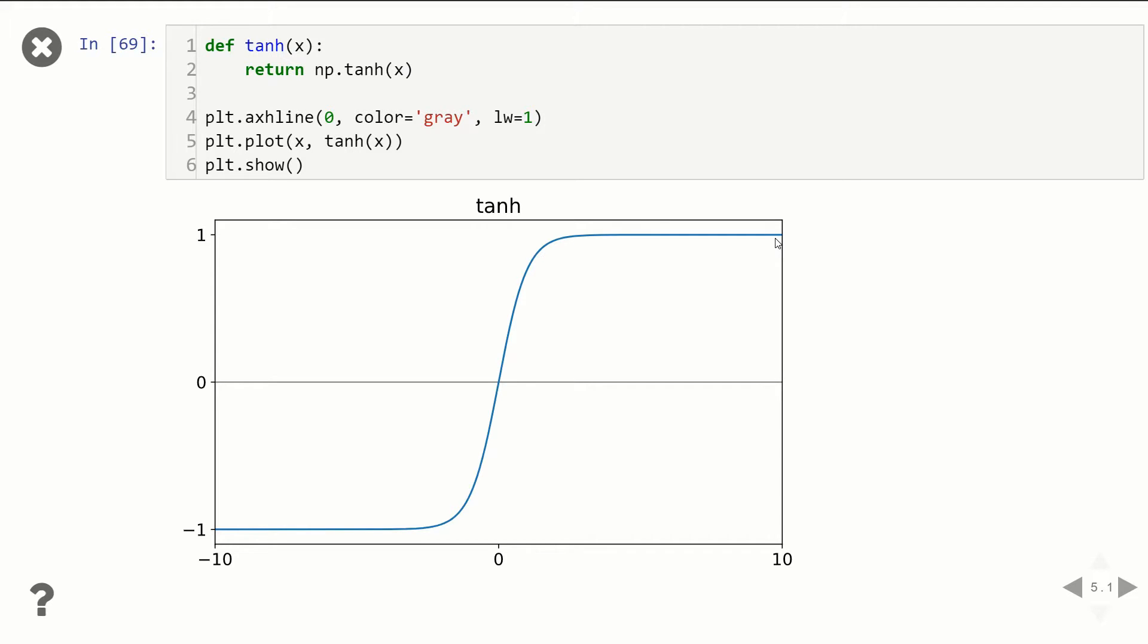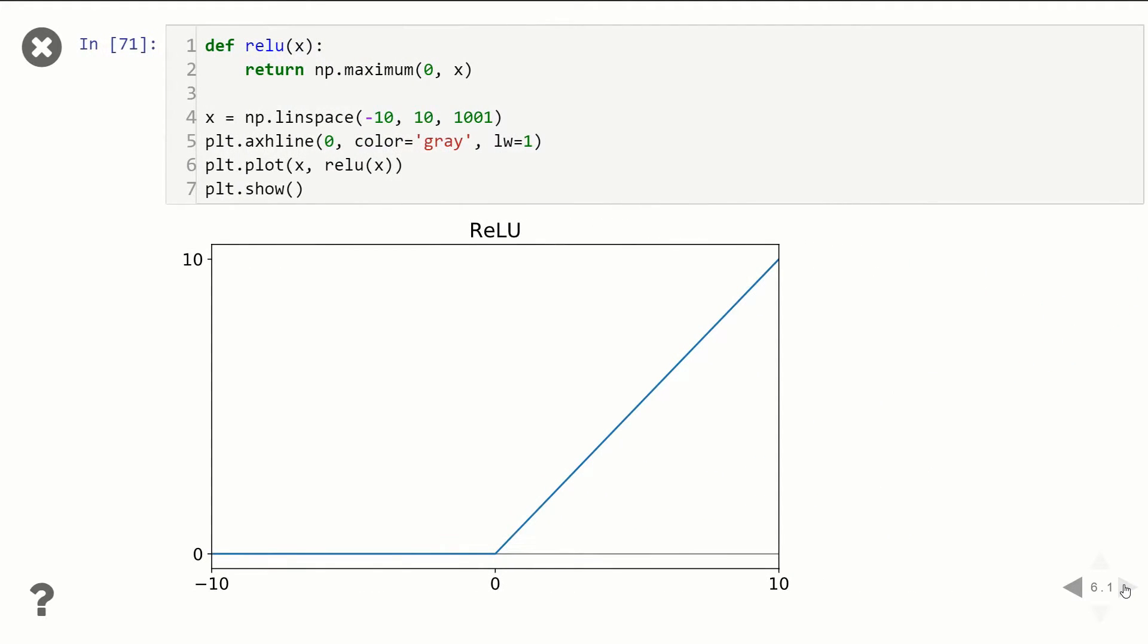But the activation function that helps correct that is called ReLU. ReLU, or rectified linear, is a pretty simple activation function. As you can see, if the input is negative, the output is going to be zero.